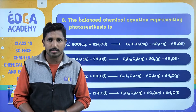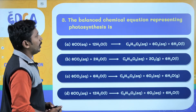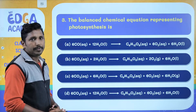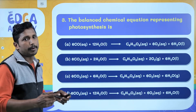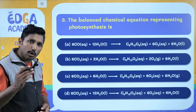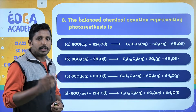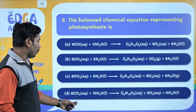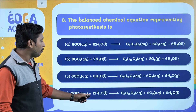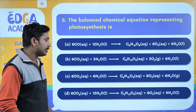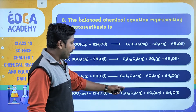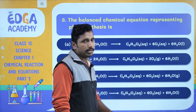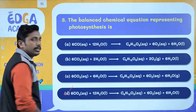Moving to the third question: the balanced chemical equation representing photosynthesis is? You have already learned that the correct equation is: 6 CO2 (aqueous) + 12 H2O (liquid) produces glucose (aqueous) + 6 O2 + 6 H2O (liquid). So option D is the right choice.